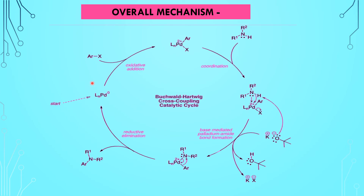Here we will revise the mechanism in cyclic form. The activated palladium catalyst undergoes oxidative addition with an aryl halide giving a product where the oxidation state of palladium is raised by two; then amine coordination; then removal of the halide by the base; then reductive elimination where the catalyst is regenerated and we get the coupled product.